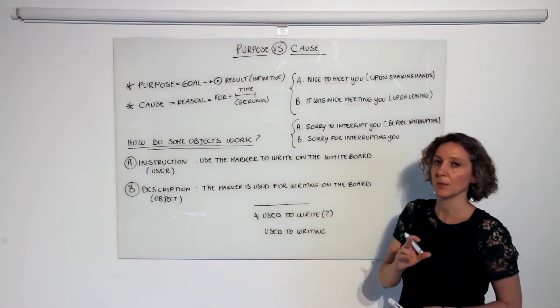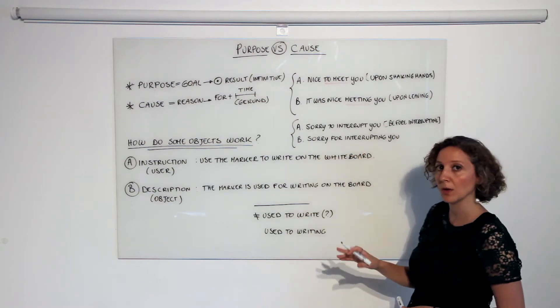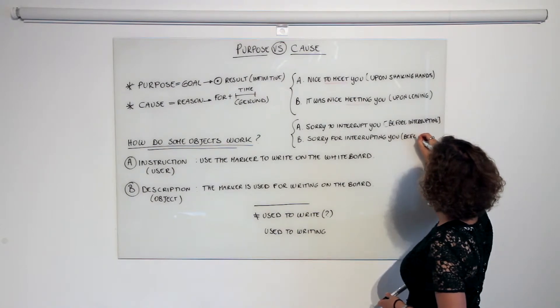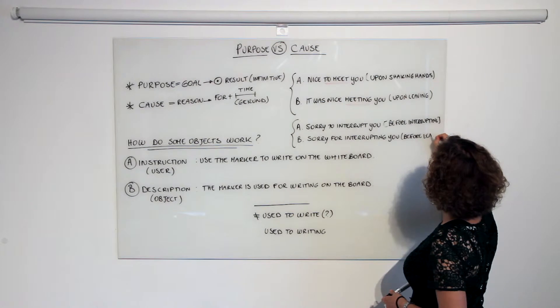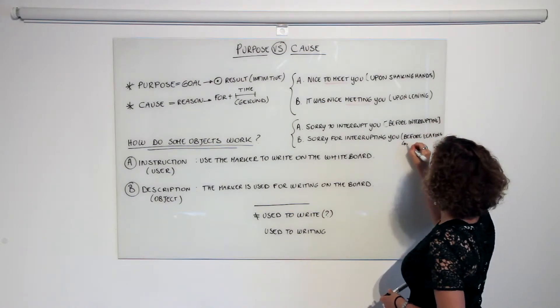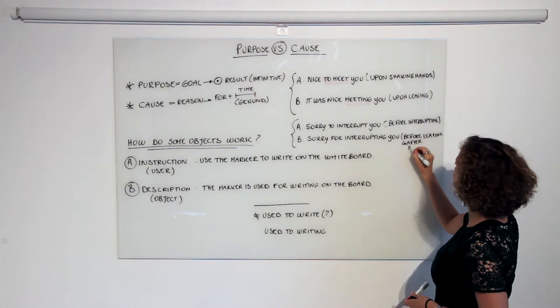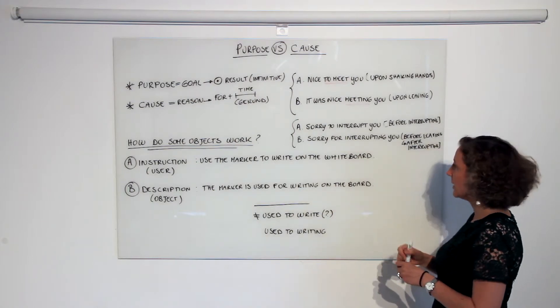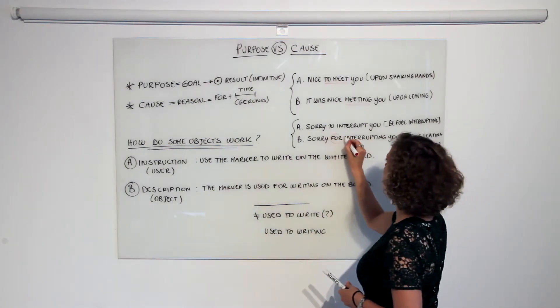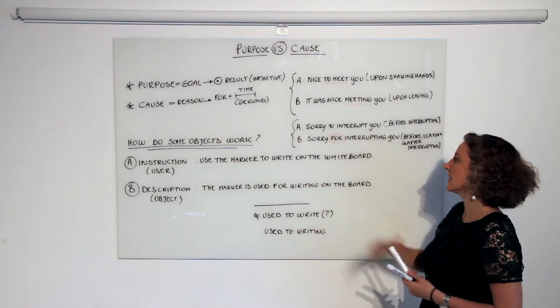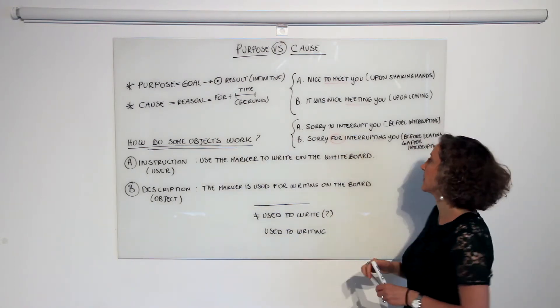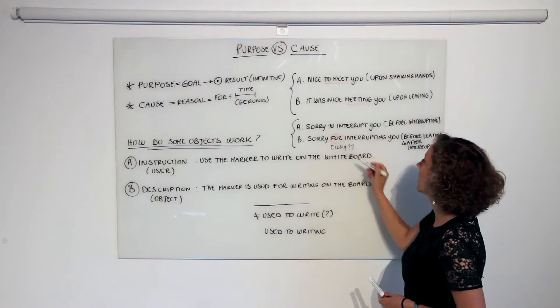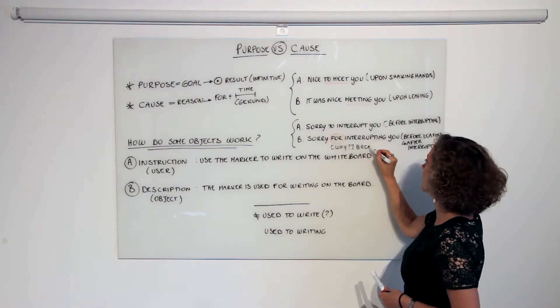Now after interrupting and upon leaving, I will not say 'sorry to interrupt you' but I will say 'sorry for interrupting you.' As you can see, the structure is different - we have 'for' plus gerund, and in this case it's like explaining the reason why you're interrupting, so this implicitly answers the question 'why am I apologizing?' Well, because I have interrupted you.